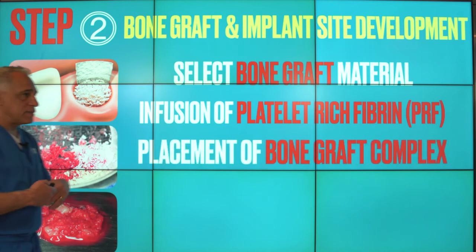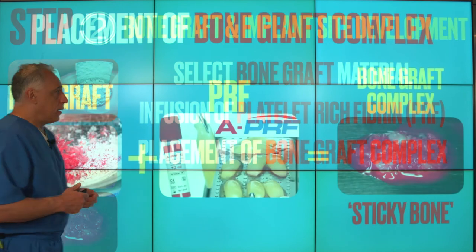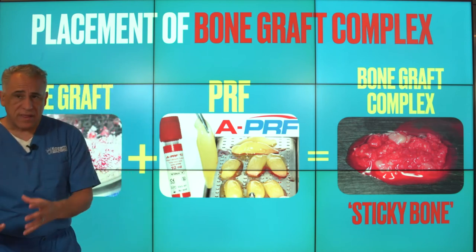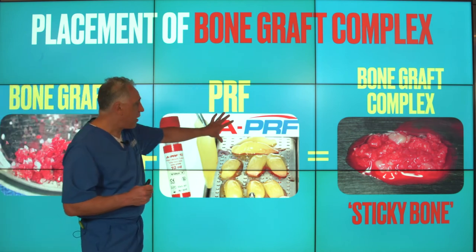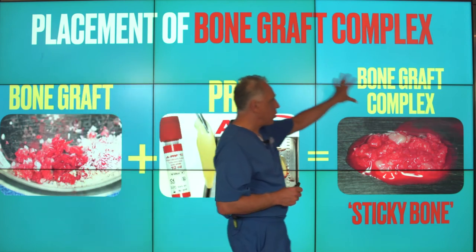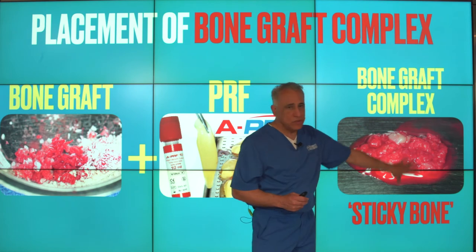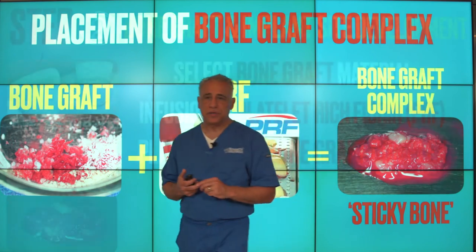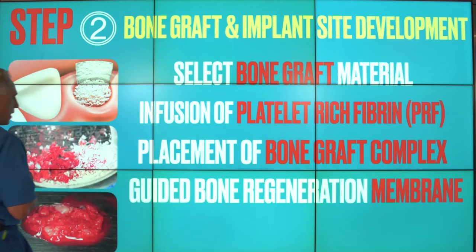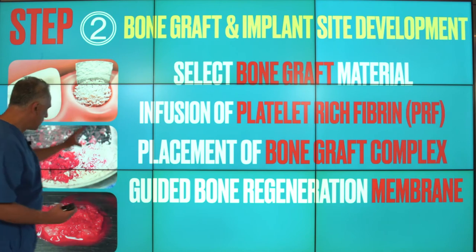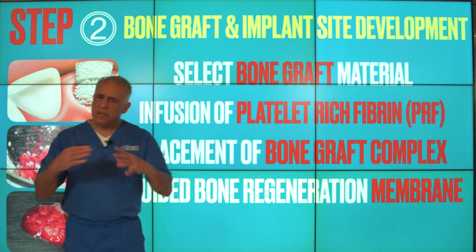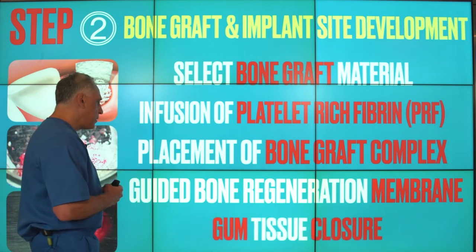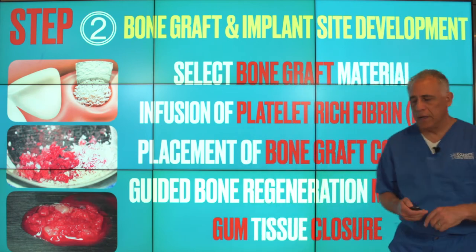The next step in bone grafting is placement of the bone graft complex. We take our bone graft material — whether the patient's own bone, synthetic bone, or a combination — and add it to the platelet-rich fibrin as a mixture to create what's called the bone graft complex, also known as sticky bone. This material has a high amount of PRF with growth factors mixed with the bone graft material ready to be grafted. We place it in the socket where the defect exists, cover it with a resorbable membrane that holds it in place during healing, and close the gum tissue over the graft in a tensionless fashion.